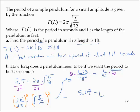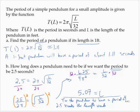So for the pendulum to have a period of 2.5 seconds, the length would need to be 5.07 feet.